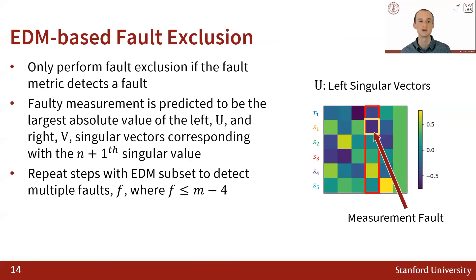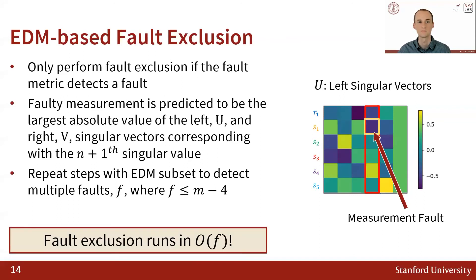In this illustration, the largest absolute value highlighted in yellow in the fourth singular vector highlighted in red corresponds with the successful identification of a measurement fault from satellite 1. This fault exclusion strategy is essentially independent of the number of measurements and can be repeated to detect multiple faults, meaning that it scales linearly with respect to the number of faults hypothesized.